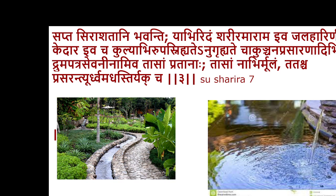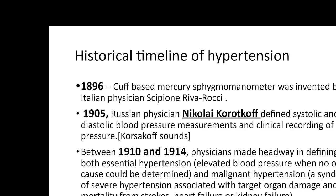The description of a closed circulatory system was mentioned in Sushruta 5000 years back, but whenever you go into history, the credit goes to William Harvey. As far as circulatory pressure and hypertension is concerned, the possibility of assessing circulatory pressure in a living human being without cutting the vessels was identified only in 1896, when a cuff-based mercury sphygmomanometer was invented by the Italian physician Riva Rocci.